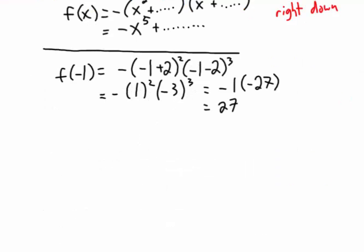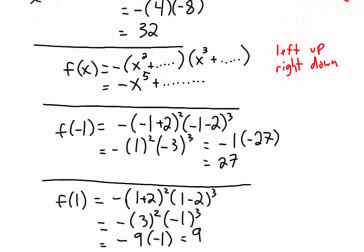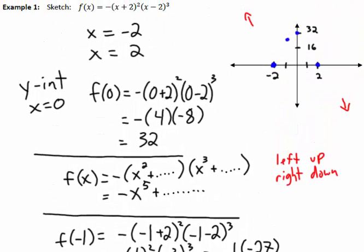We can now put that point on our graph — f at negative 1 is 27. Similarly, evaluating at x equals 1 gives a value of 9, which we plot as another point. With these coordinates, the graph starts pointing up on the left, comes down to negative 2 and bounces, passes through our intermediate coordinates, goes through 2, then points down — and there's our sketch of the polynomial function.